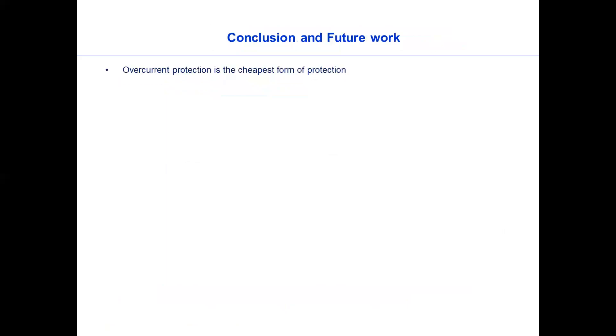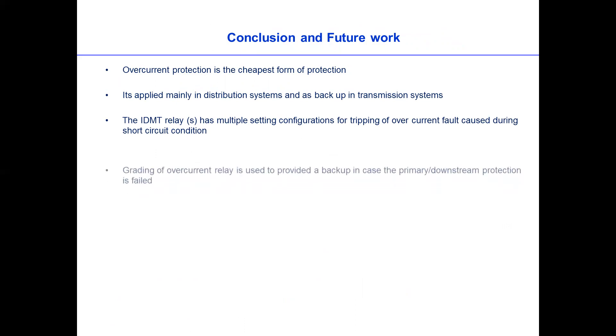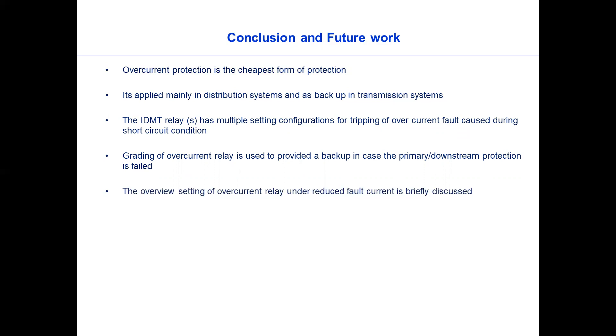So we discussed that the overcurrent protection is the simplest and cheapest form of protection. It is mainly applied in the distribution system and sometimes as a backup in transmission system depending, of course, different countries have different protection policy. IDMT curve or relay has a multiple setting configuration so that it can be set based on different curves, depending on their application. And then of course, grading of overcurrent protection is provided in case of upstream and downstream backup as well. So the overview setting of overcurrent relay and the reduced fault current is briefly discussed. Okay, thank you.